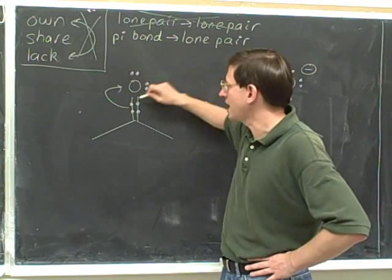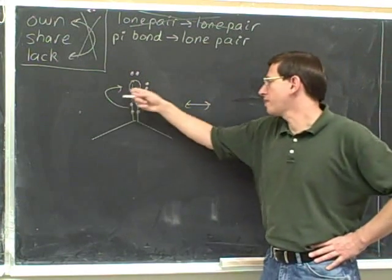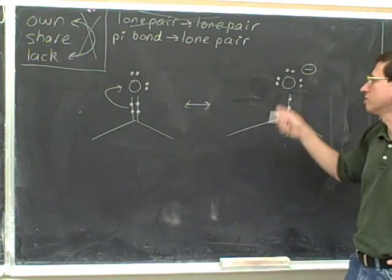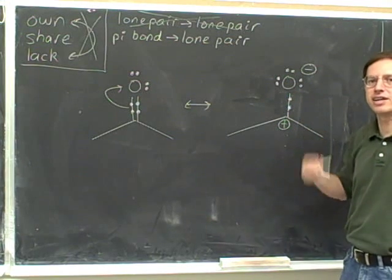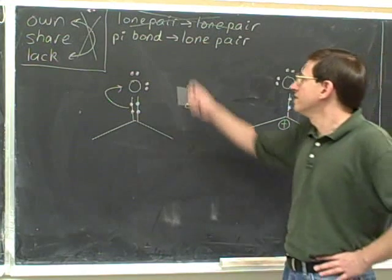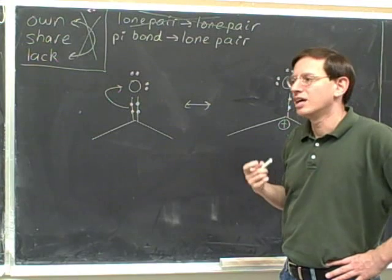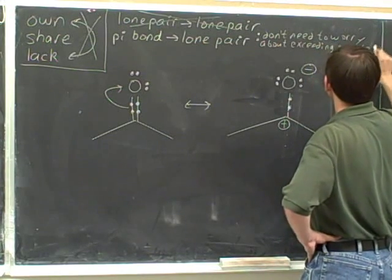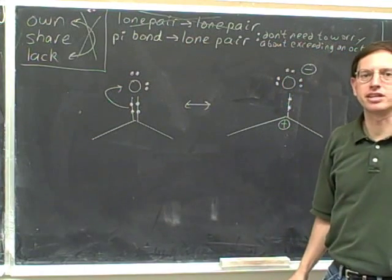This oxygen has eight electrons around it, and when we moved the pi bond into a new lone pair, the oxygen still had eight electrons around it — it had not exceeded an octet. So this is an important idea: this type of transition, pi bond to lone pair, we don't need to worry about exceeding an octet. There's no way when you make a pi bond into a lone pair that you can exceed an octet.